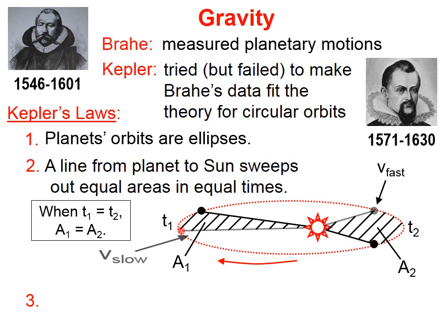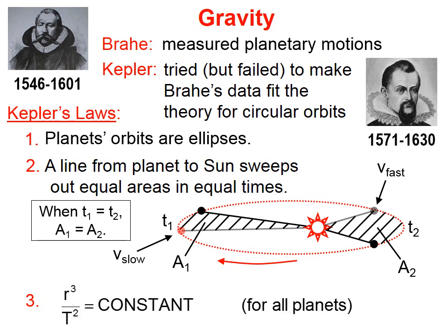It turns out that when the planet is closer to the sun, it's moving a little faster. When it's farther away from the sun, it's moving a little bit slower.